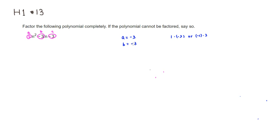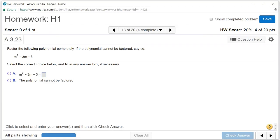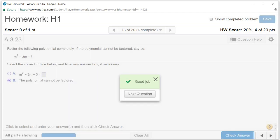So the AC test tells you that this cannot be factored nicely. So let's type it in. So it's going to be B. Let's check the answer.